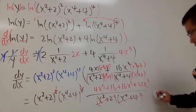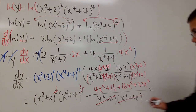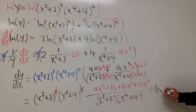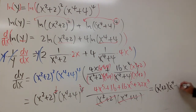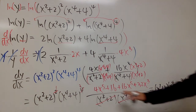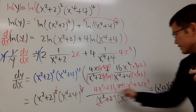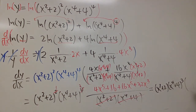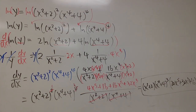So the final answer is: dy/dx equals x squared plus 2 times x to the fourth power plus 4 to the third power, multiplied by 20x to the fifth power plus 32x to the third power plus 16. And with that, we are done.